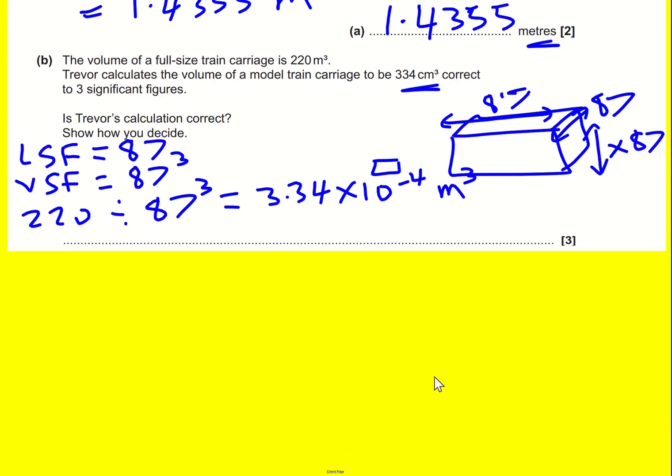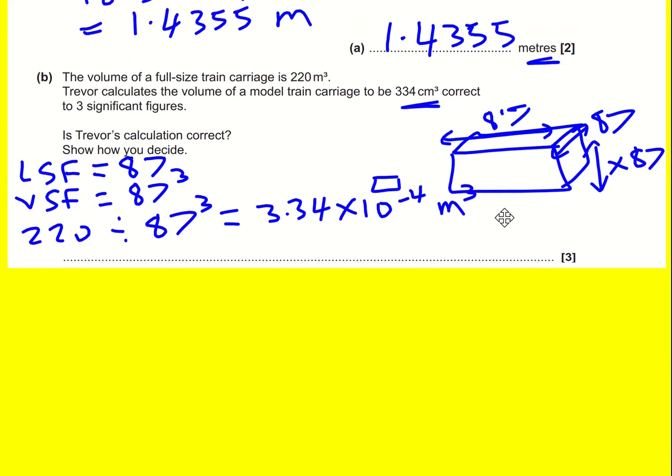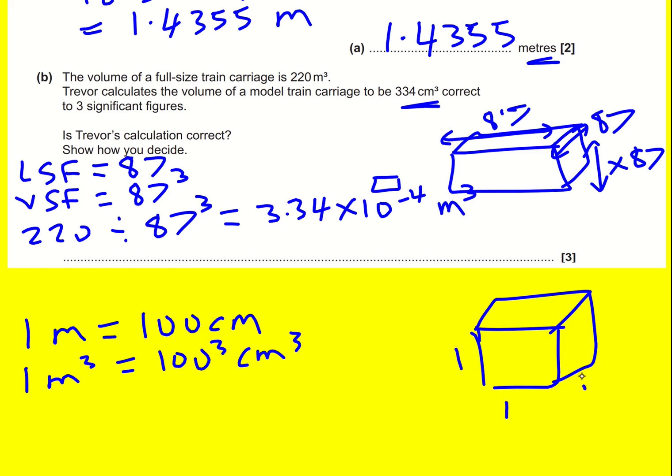Trevor's calculating in centimeters cubed, so what do I do to go from meters cubed to centimeters cubed? Well, one meter is a hundred centimeters, so one meter cubed will be 100 cubed centimeters cubed. You can see one by one by one is one meter cubed, but this will be equivalent to a hundred by a hundred by a hundred. That's why I have to cube the hundred.